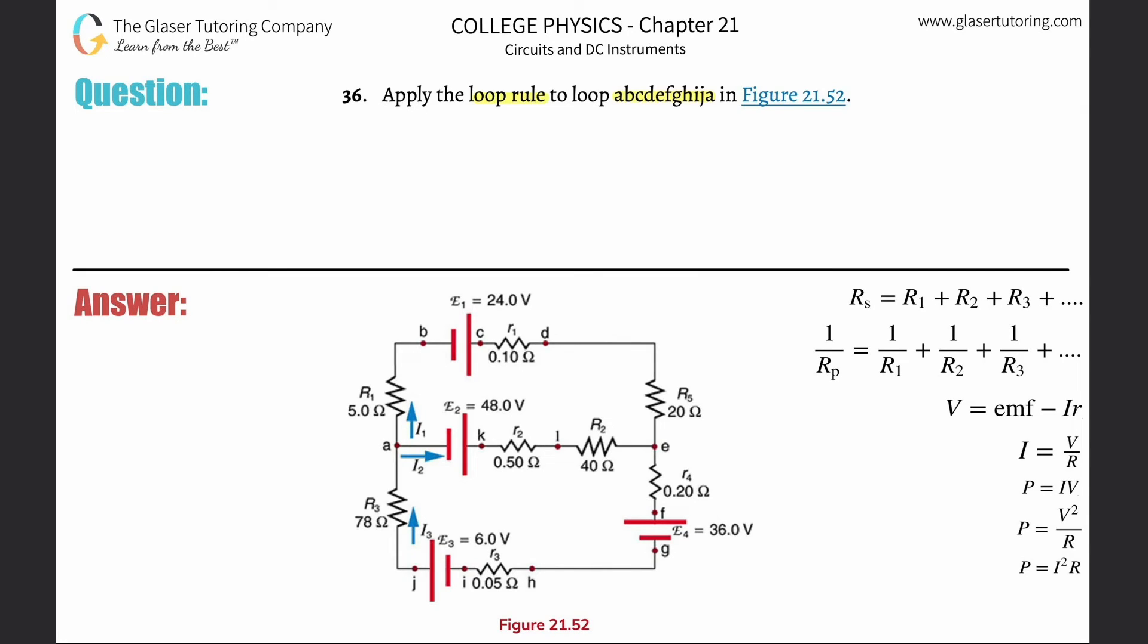We've got to apply loop rules. The loop rule says that the sum of all the potential rises minus the sum of all the potential falls or drops will equal zero.